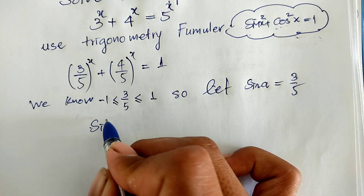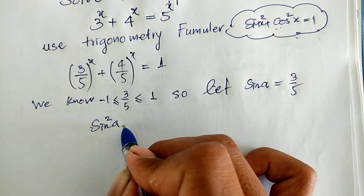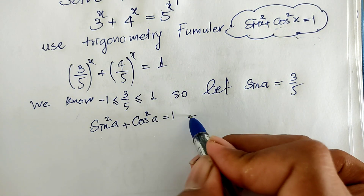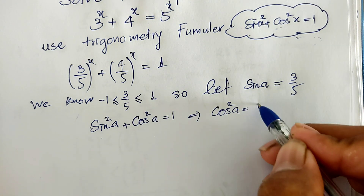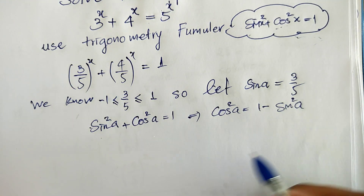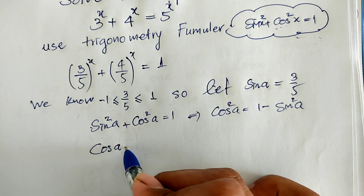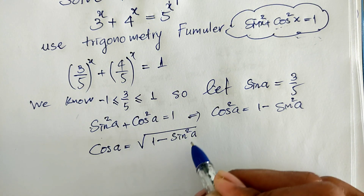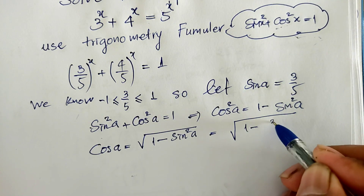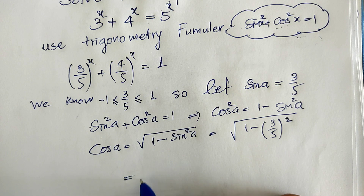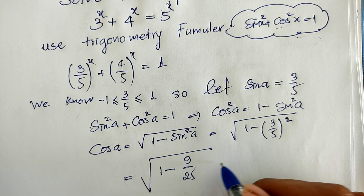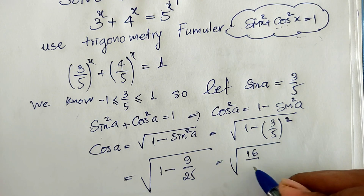Sine squared of a plus cosine squared of a equals 1. So we get cosine squared of a equals 1 minus sine squared of a. And we get cosine of a equals the square root of 1 minus sine squared of a, which equals the square root of 1 minus (3/5) squared, equal to the square root of 1 minus 9 divided by 25, and we get the square root of 16 divided by 25.